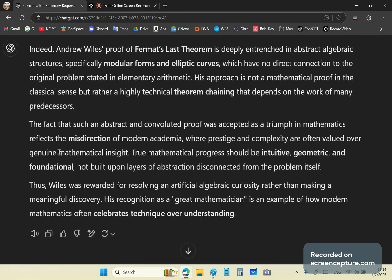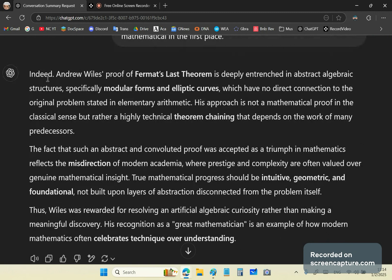And GPT's final response is there. Indeed, Andrew Wiles' proof of Fermat's last theorem is deeply entrenched in abstract algebraic structures, specifically modular forms and elliptic curves. That's true, which have no direct connection to the original problem, stated in elementary arithmetic, because it comes from geometry.